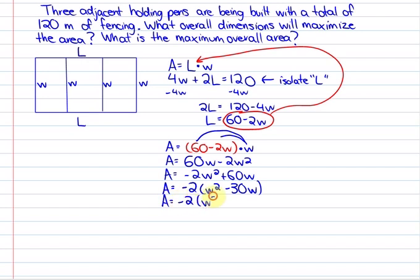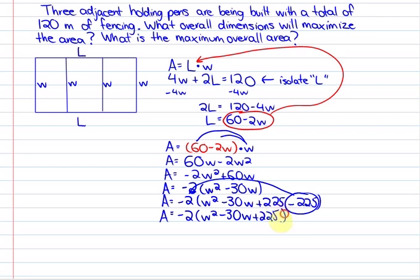We've looked at completing the square previously. We are going to be adding and subtracting half of 30 squared, which is 225. And then removing that negative term from the bracketed factor. So we're left with a completed square of area is equal to negative two times w minus 15 squared plus 450.